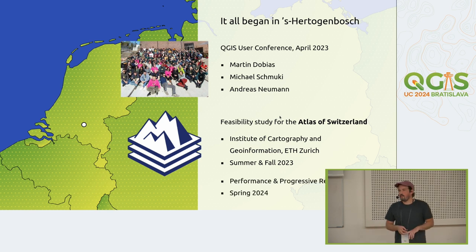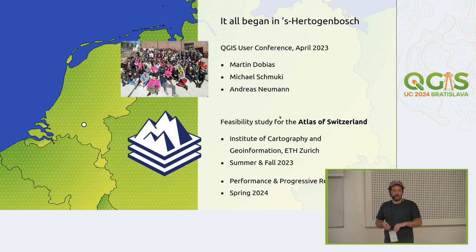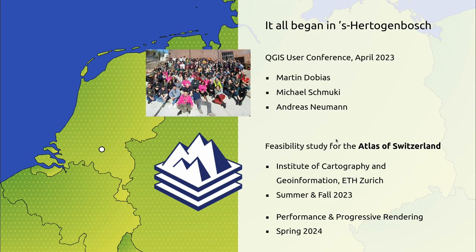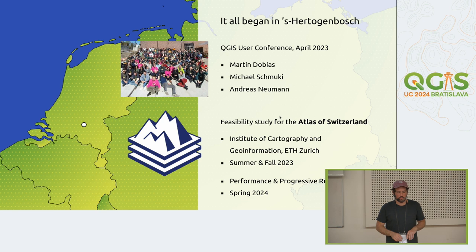The project started a year ago at the last user conference where Martin Dobias, Andreas Neumann, and I teamed up to make this whole thing possible. Martin had a working prototype of QGIS running in the browser, and I had done a lot of WebAssembly work. Andreas Neumann knew he would join ETH Zurich, and his vision for the Atlas of Switzerland was to bring it into the browser. ETH funded our feasibility study where we made a working prototype in summer and fall last year. This spring, a small project let us cut the rendering time in half and implement progressive rendering, where the map builds up dynamically as you know it from your desktop QGIS.